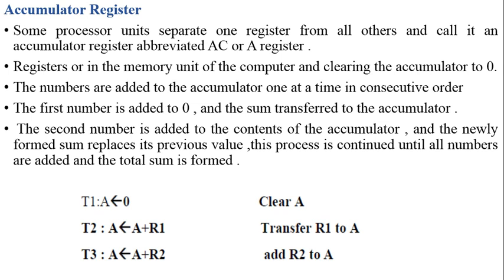In this video we discuss the significance of a special register named the accumulator register. Some processor units separate one register from all others and call it an accumulator register, abbreviated as AC or A. This register, whether in a processor or memory unit, is initialized or cleared with a value of 0 in usual cases.